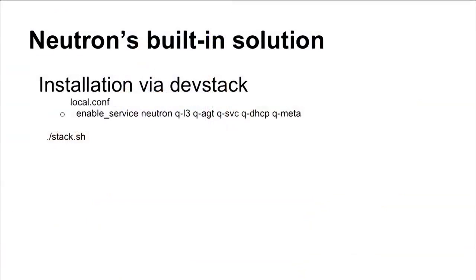Neutron's built-in solution is easy to set up. The open source solutions are packaged in all the distros — just install the appropriate packages. Via DevStack, you enable services for neutron along with ql3, qagent, qservice, qdhcp, and qmeta. The 'q' prefix comes from when neutron was called Quantum — for historical reasons that prefix still exists in DevStack. Running stack.sh builds the default open source setup; distro packages will install ML2 by default.